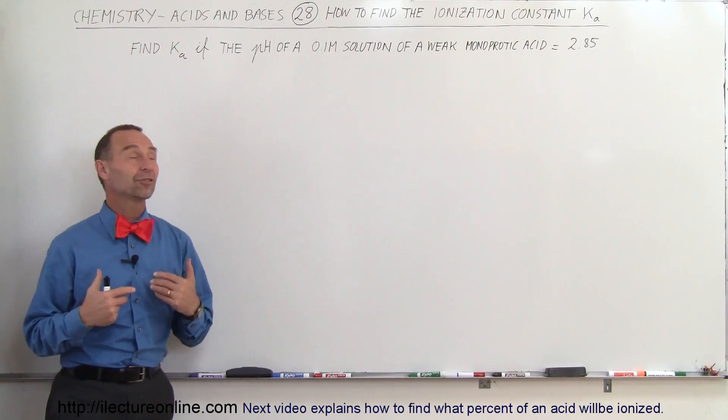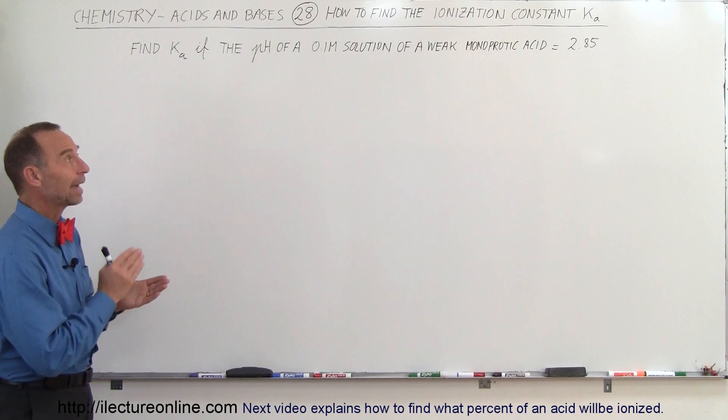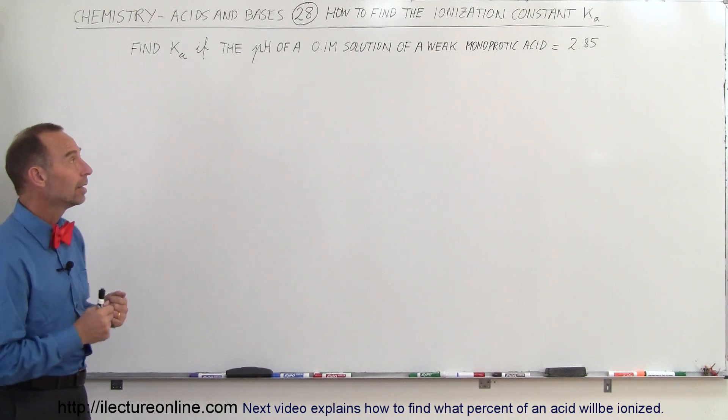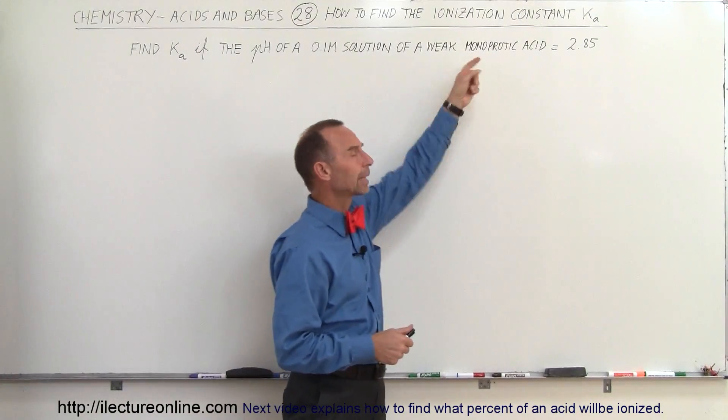Welcome to ElectronLine and now we have a different spin on the same type of problem. In this case we're trying to find the ionization constant, Ka, of a weak acid. What type of acid is it? Well it's a monoprotic acid.